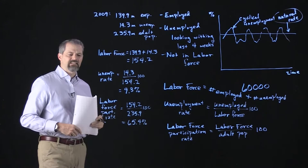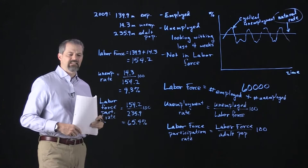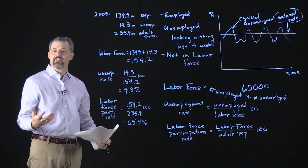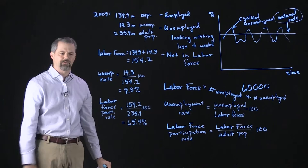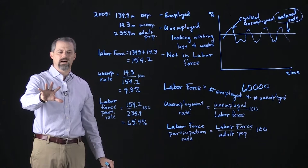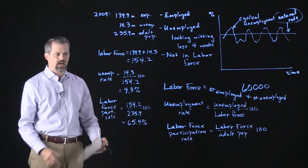So approximately 65% of the adult population was participating in the labor force, which means approximately 35% was not participating — not working, not looking for a job, at least not at a paid job. They could be homemakers, students, working hard but not at a paid job.